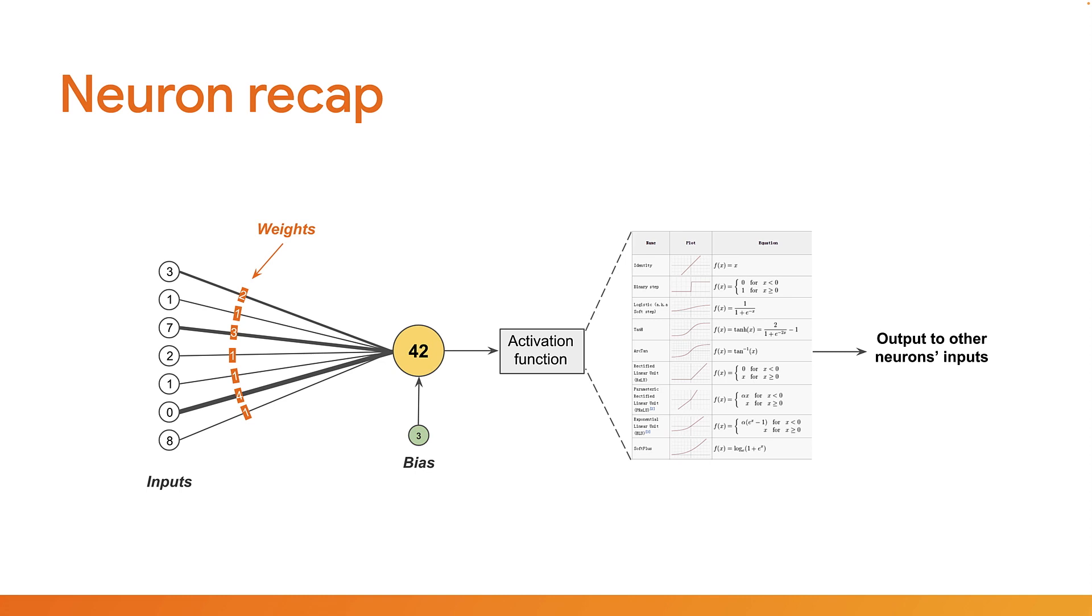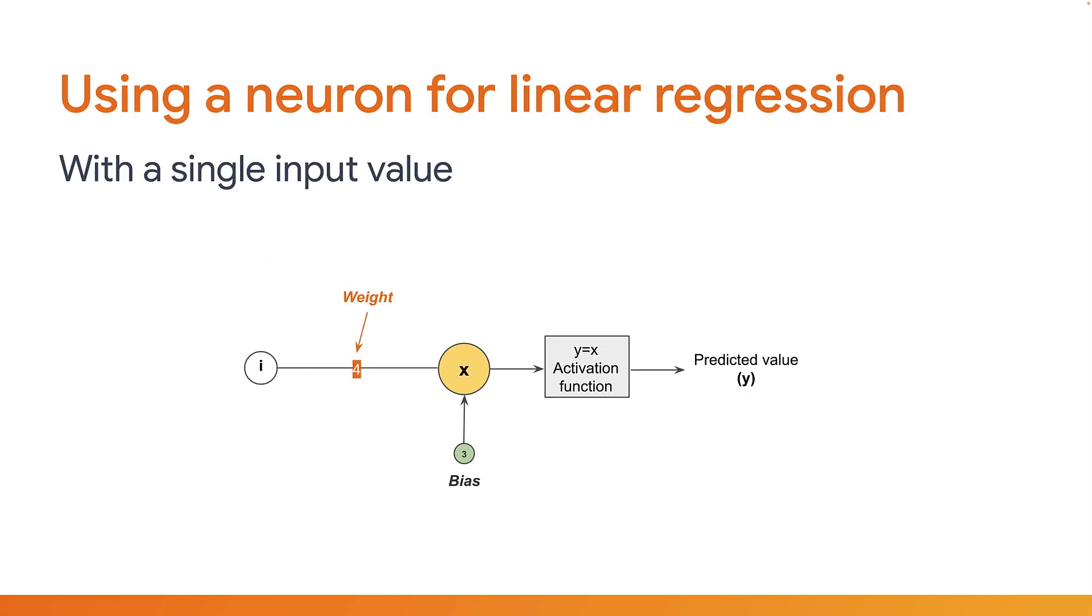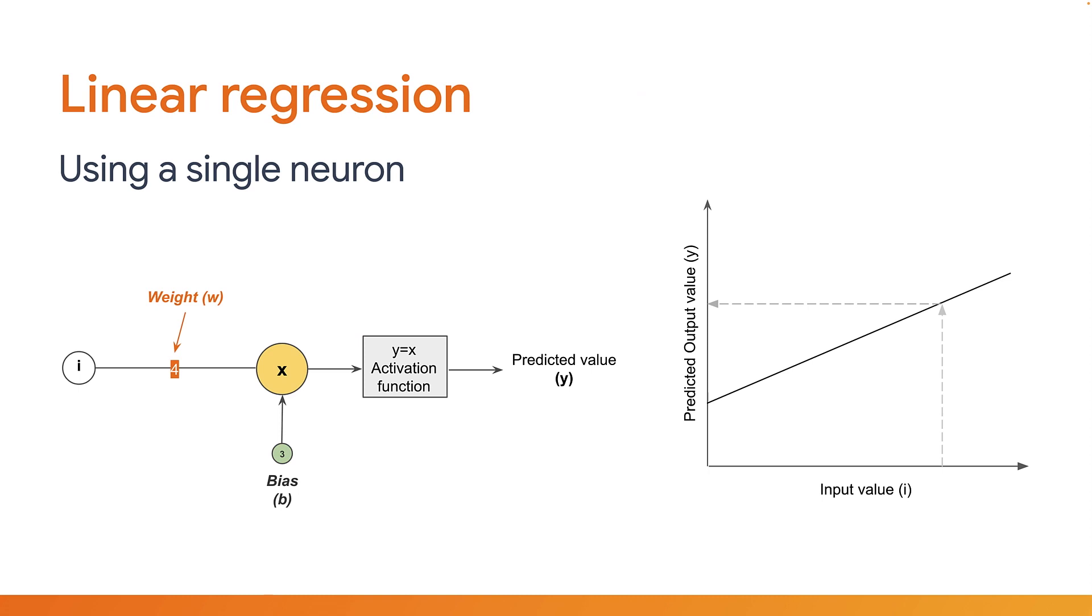Now, in the prior section, you saw that a neuron can take multiple inputs, do some mathematics and then produce an output. So let's change the number of inputs to the neuron to be a single input as shown here to simplify matters, as it will make it easier to understand what's going on. Let's also make this the only neuron in the network, so its output is simply the predicted value. Now, linear regression, which is essentially the act of finding an equation of some straight line, as shown on the right, can actually be solved by a single neuron like this.